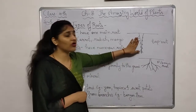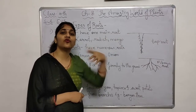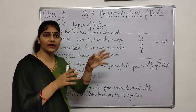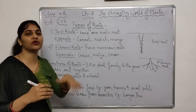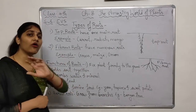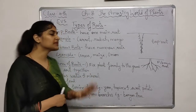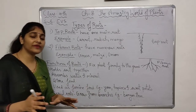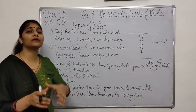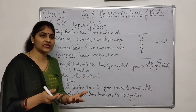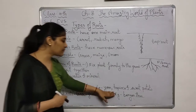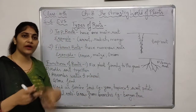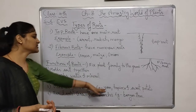The next function is storing of food. You can see that radish and carrots store food in their roots — that is why we eat them. Some roots are used as food, but not all roots. Some roots are used as famine food. Famine foods are foods we eat during scarcity, like yam, tapioca, and sweet potato. Sweet potato is very common. These are all examples of famine foods.